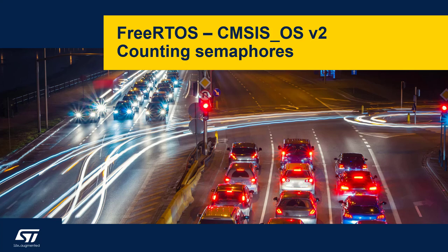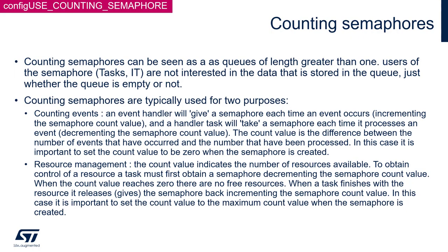Let's have a closer look at counting semaphores, which are implemented within FreeRTOS. A counting semaphore can be seen as a queue of length greater than 1. Users of semaphores — tasks and interrupts — are not interested in the data stored in the queue, but just whether the queue is empty or not.